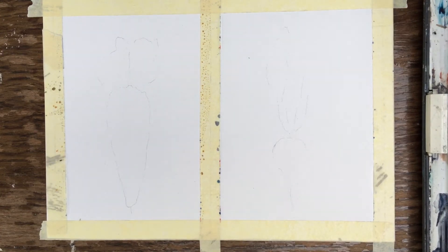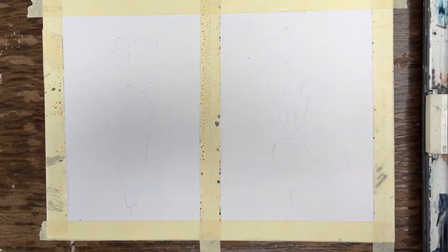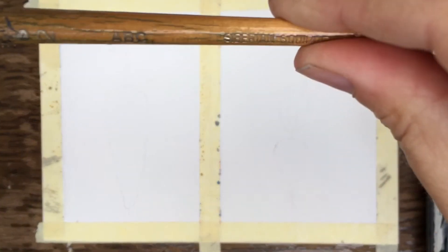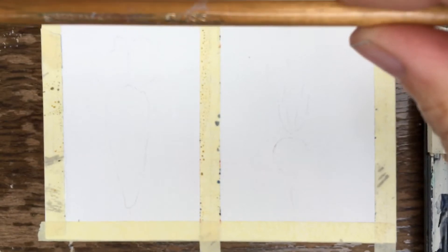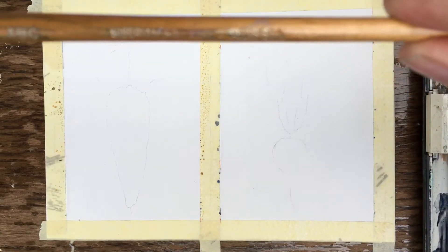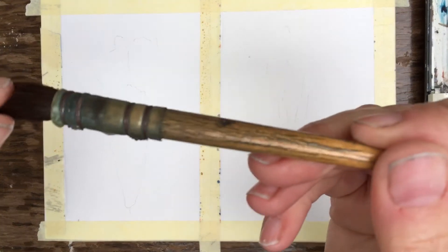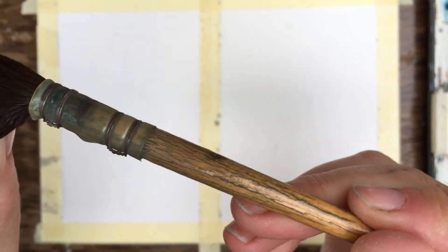With the carrot, what I'm going to use is a Chinese brush. This is a fairly cheap Chinese brush, a size 2. And I'm just going to lay down the orange of the carrot with this large mop area.